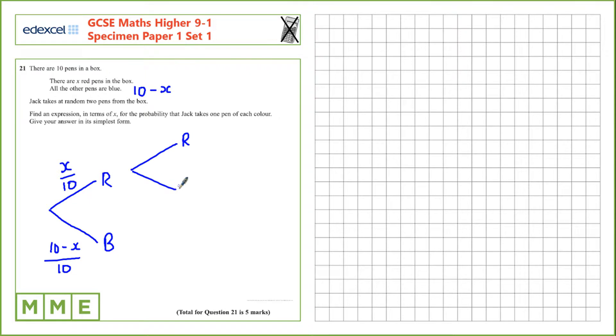For the second pick, if red is picked first, there will be one fewer red in the box, that's x minus 1, and there's one fewer pen in the box over 9. If red was picked first and then blue is taken, there's still 10 minus x blue pens, but there's only 9 pens in the box.